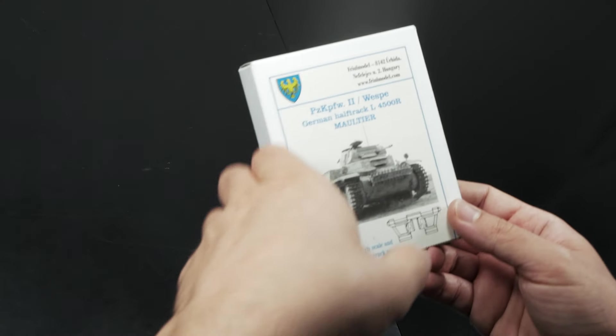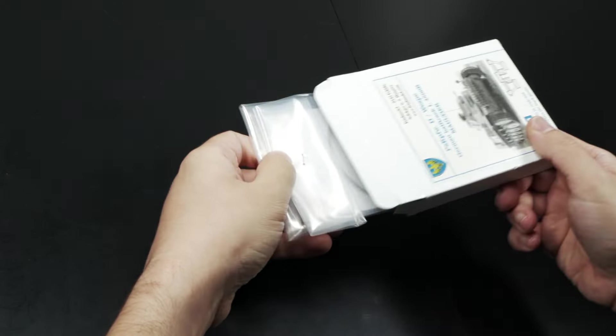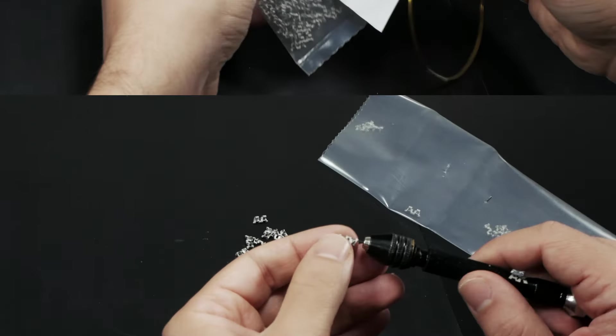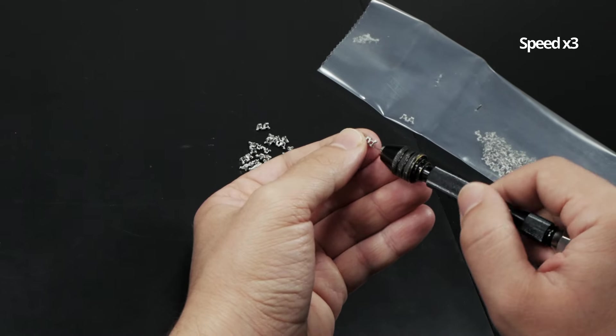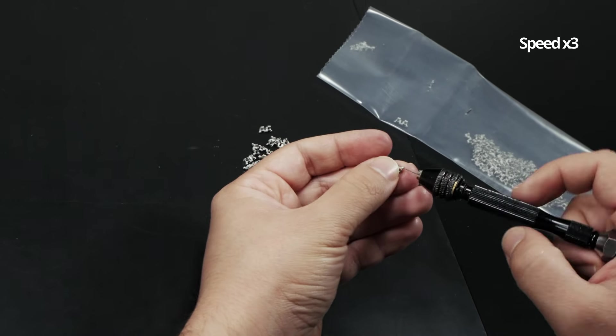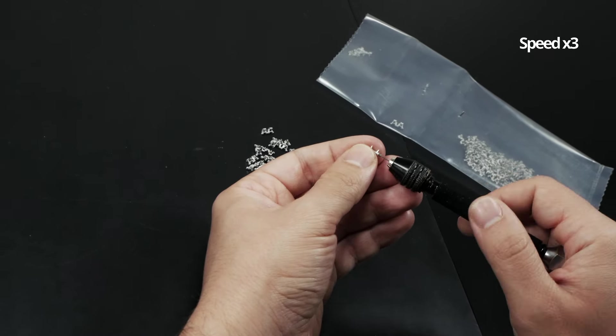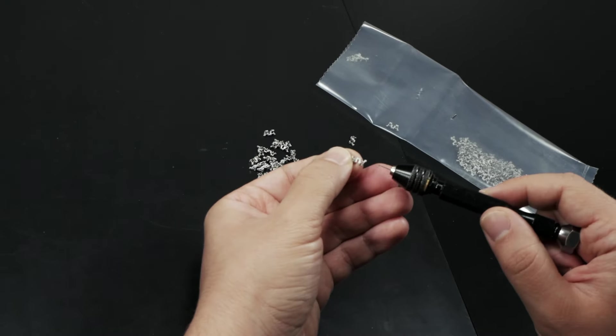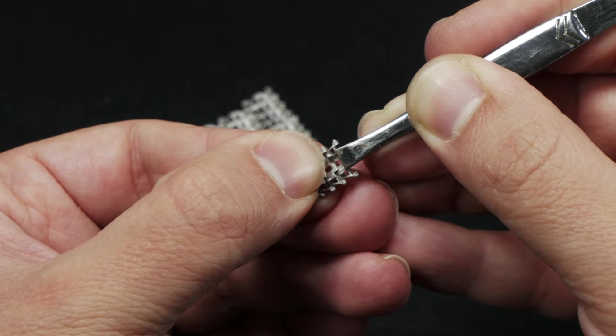I could make another separate video about how to assemble some metal tracks, but I decided to include them as another chapter of this video. These tracks come with all separate links. So first, you have to use a hobby drill for hollowing all the links, at least to make sure there's no remaining casting material inside the link where the metal pin is supposed to be.